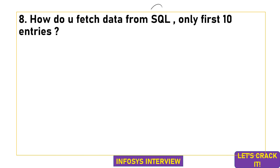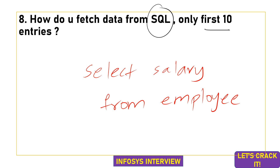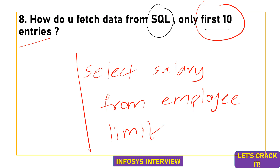He was also asked a basic SQL query question: how do you fetch only the first 10 entries from a table? To fetch data, we use the SELECT statement — for example, 'SELECT salary FROM employee' fetches all salaries. To restrict to the first 10 entries, we add the LIMIT keyword: 'SELECT salary FROM employee LIMIT 10'. Using LIMIT 5 fetches the first 5 entries, and LIMIT 10 fetches the first 10.